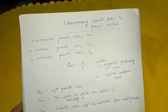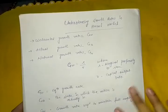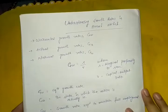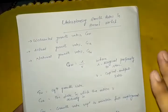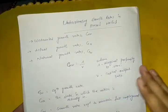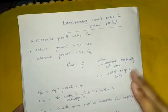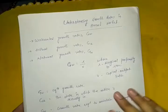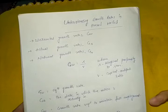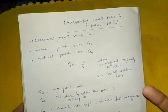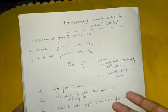Hello guys, welcome back to the Economics Made Easy channel. In this video I'm going to discuss the different growth rates in the Harrod model. Harrod has used three kinds of growth rates: the warranted growth rate, the actual growth rate, and the natural growth rate.